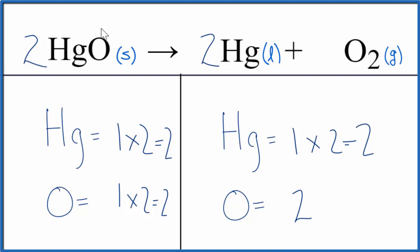This is Dr. B with the balanced equation for the decomposition of HgO, mercury two oxide. We also looked at the type of reaction, its decomposition, and we looked at the states. Thanks for watching.